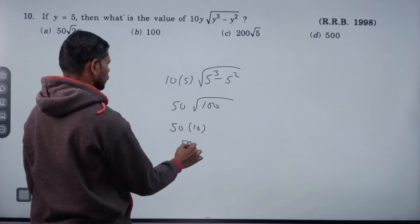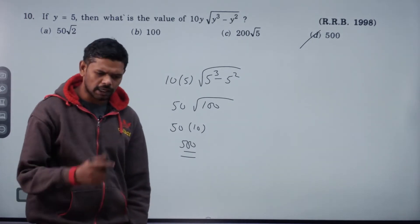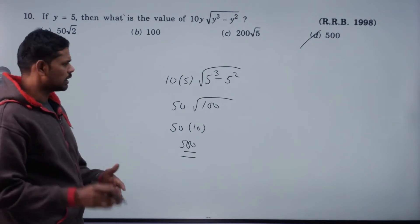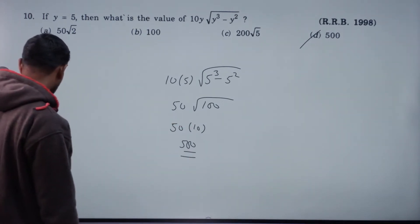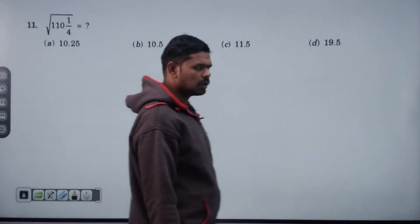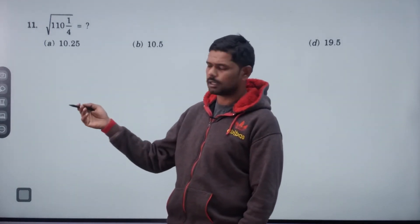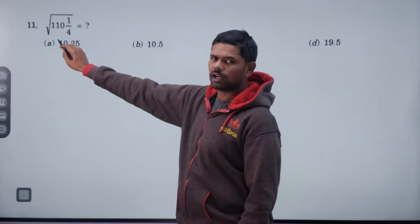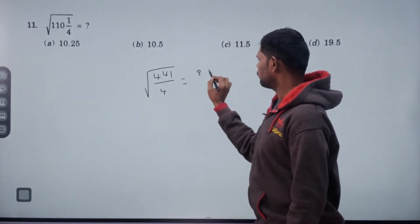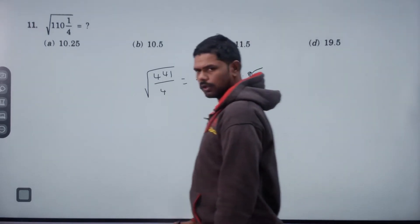Answer 500. 440 plus 1 is 441. Root of 441 value is 21. 21 by 2, answer 10.5.